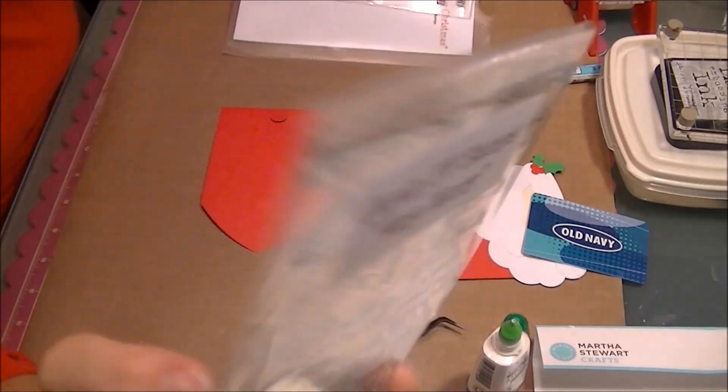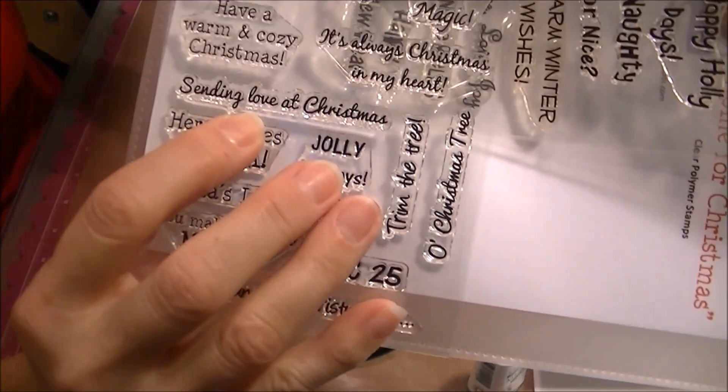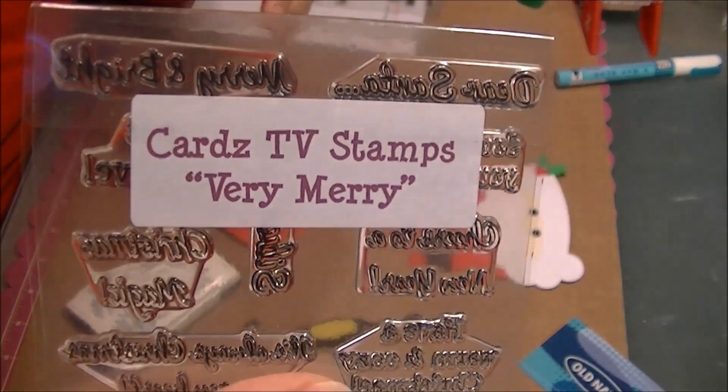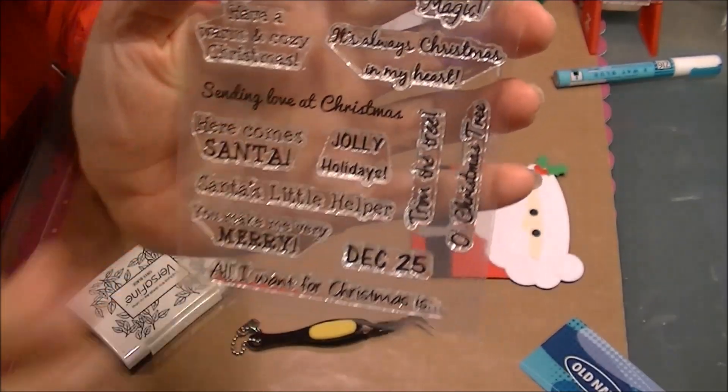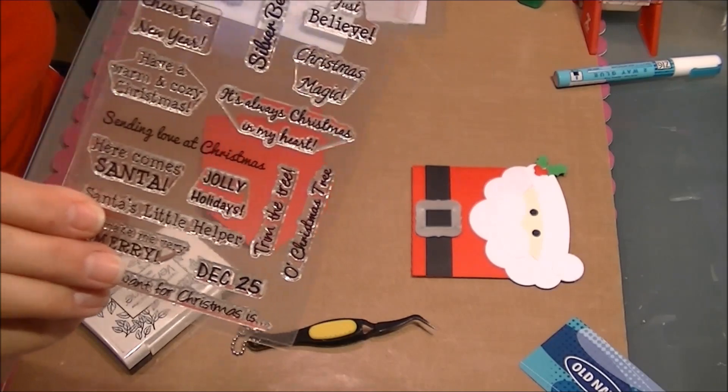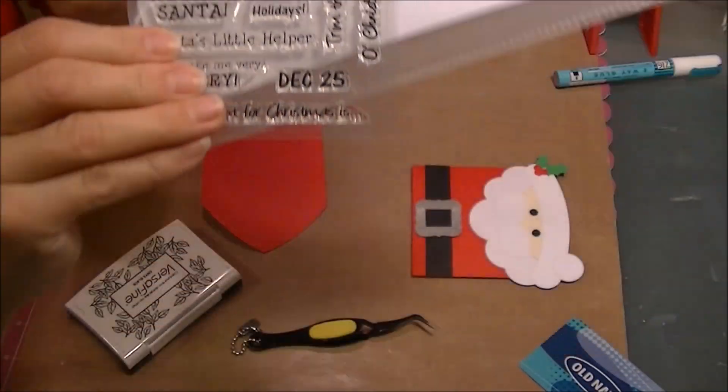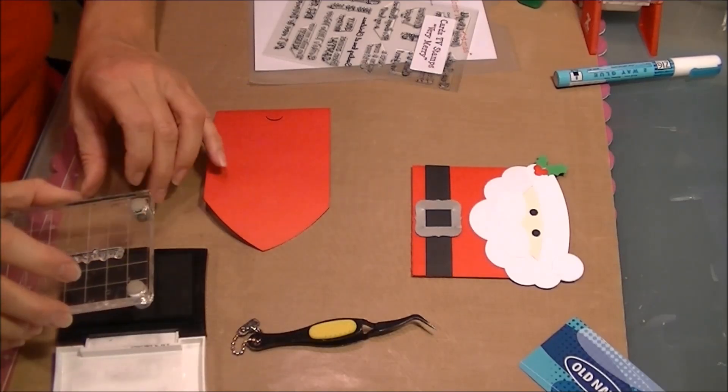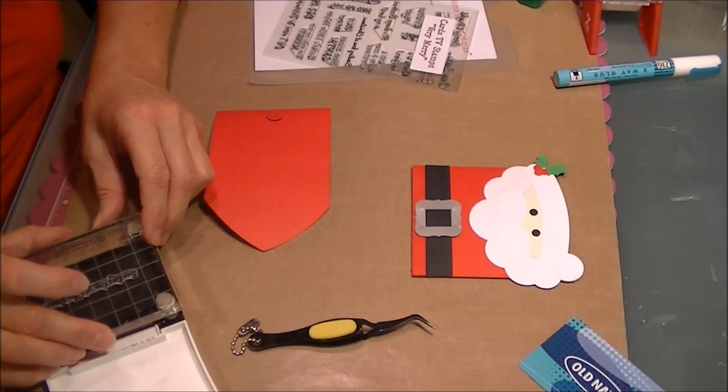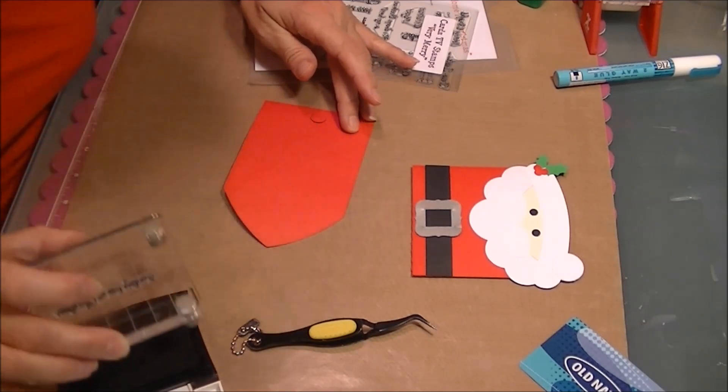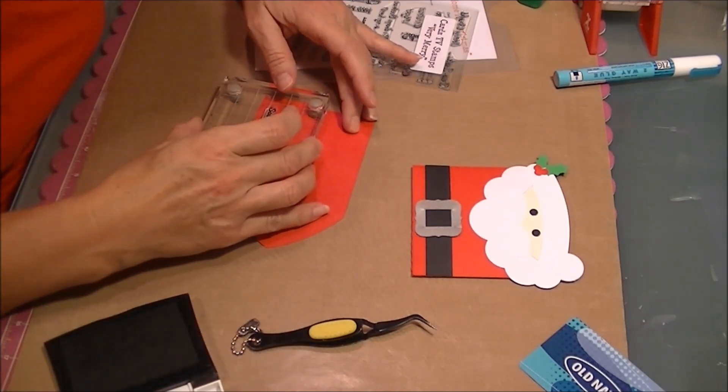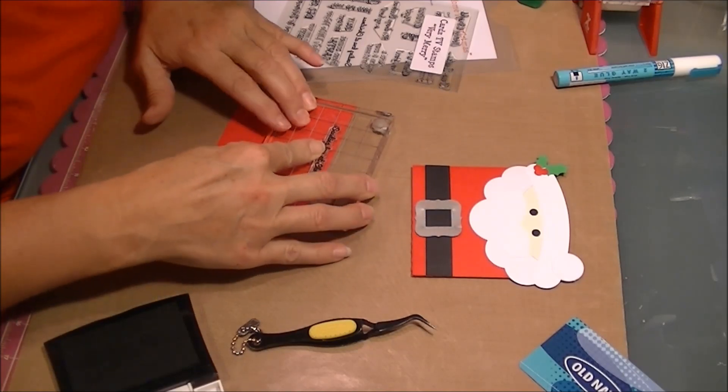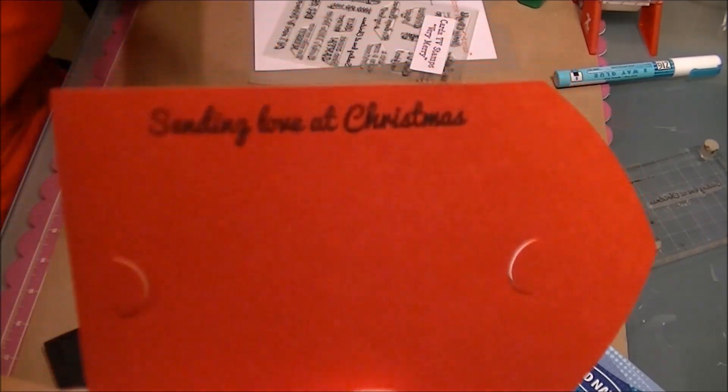For the Very Merry set, I'm going to use Sending Love at Christmas right here. Right there it is. I'm using VersaFine Black Onyx Ink. I'm going to stamp that right along the bottom here. I'm going to put it up top. Sending Love at Christmas, it's a very pretty font.